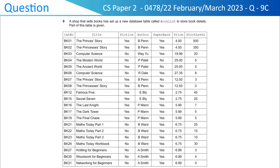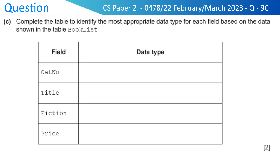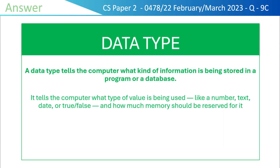The question is: a shop that sells books has set up a new database table called book list to store book details. Part of this table is given. Complete the table to identify the most appropriate data type for each field based on the data shown in the table book list. To solve this question,